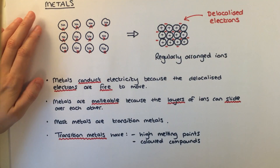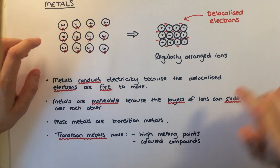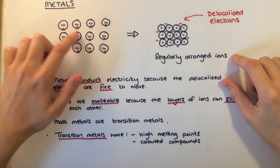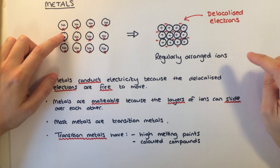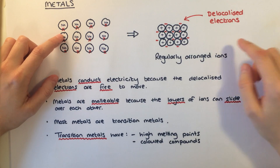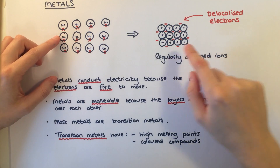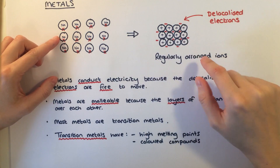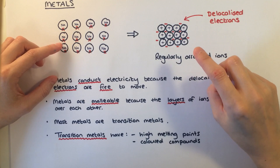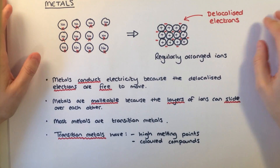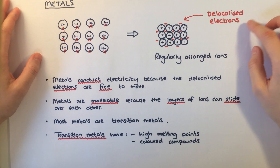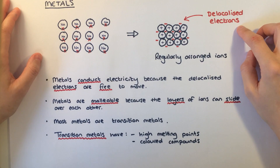When metal structures are formed, electrons leave the outer shells of the metal atoms and form a sea or cloud which surrounds the positive ions that are formed. The electrons are referred to as delocalised electrons.